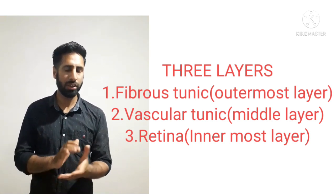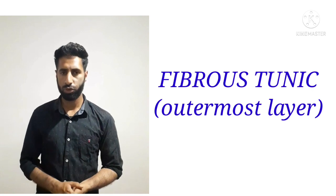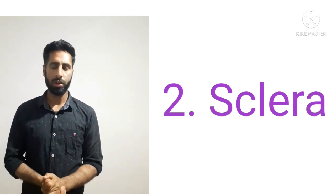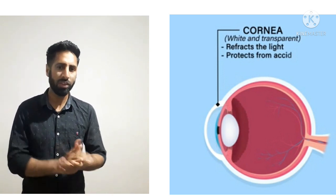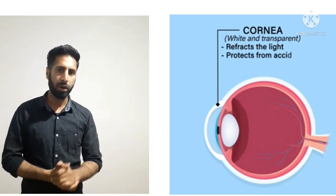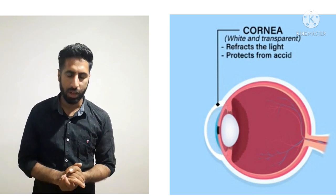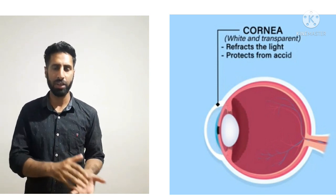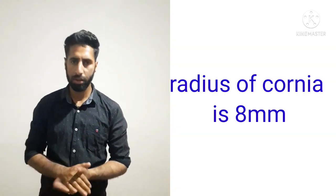First I will explain the fibrous tunic. It consists of two parts: one is called the cornea and another is the sclera. The human eye is not a perfect sphere-shaped but it's a fused two-piece unit. The frontal smaller part is called the cornea. It's transparent and allows light to enter the eyes, and hence it's also called the window of the human eye. Maximum refraction of light takes place at the cornea. The radius of this cornea is 8 millimeters.